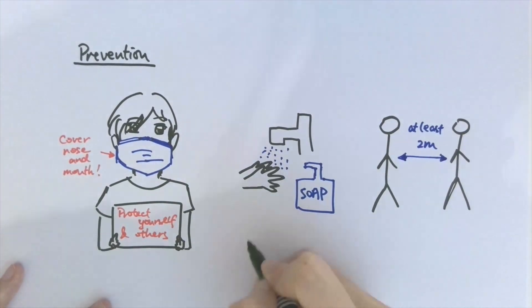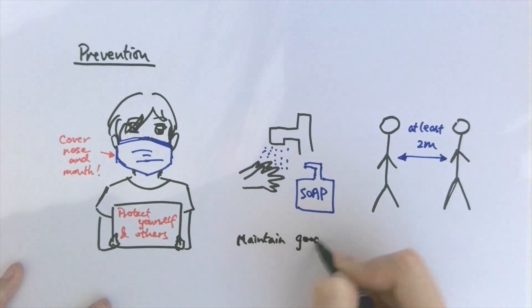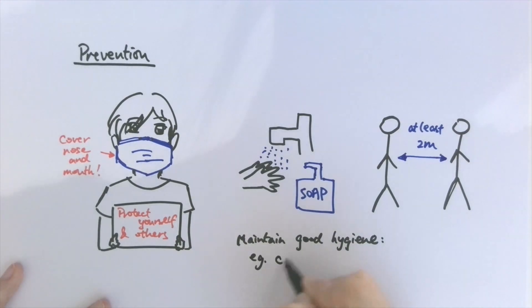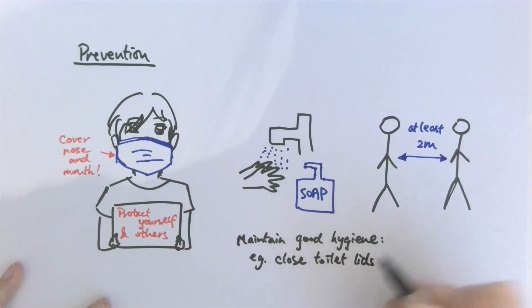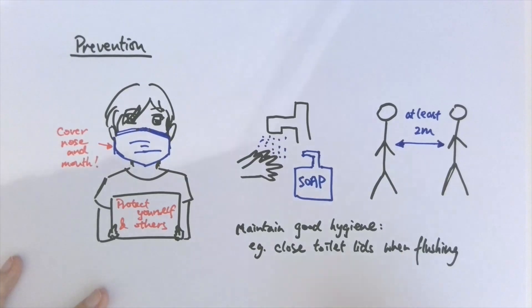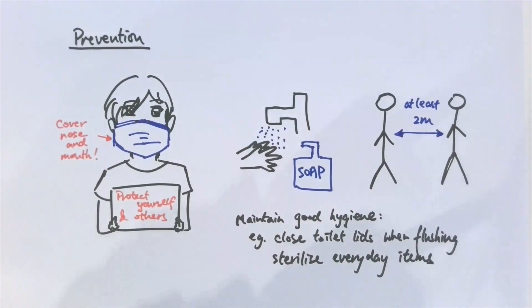Generally speaking, it's extremely important to maintain a higher sense of hygiene. Putting down the toilet lid before flushing can prevent the virus from being propagated around the toilet along with excretion particles. Sterilize your everyday items wherever possible, such as your mobile phone — you can take the phone case off and wash it with soap and warm water, and wipe the screen and buttons using an alcohol wipe.